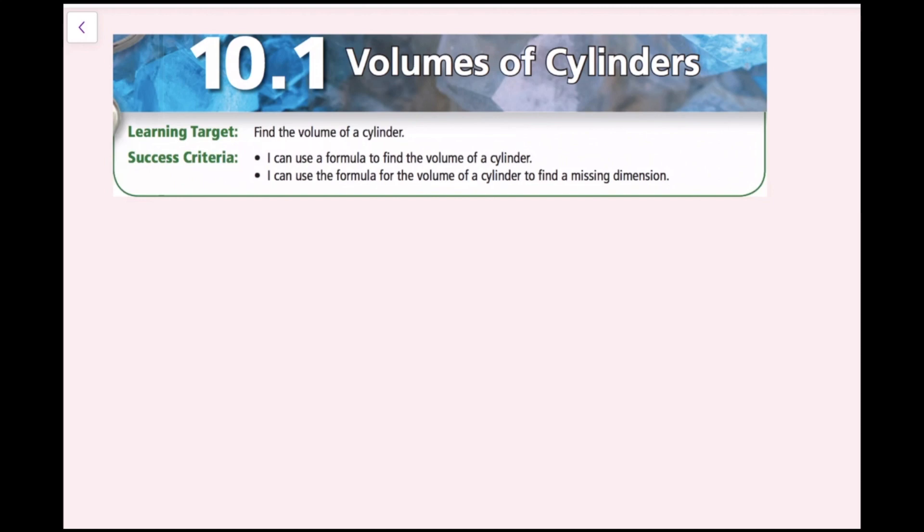In this lesson, we're going to be finding the volume of a cylinder. The success criteria are: I can use a formula to find the volume of a cylinder, and I can use the formula for the volume of a cylinder to find a missing dimension.